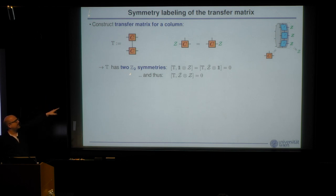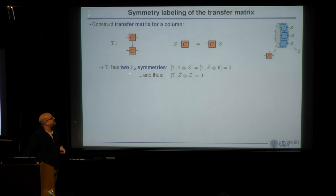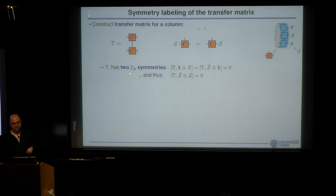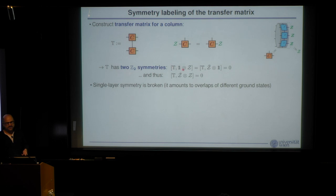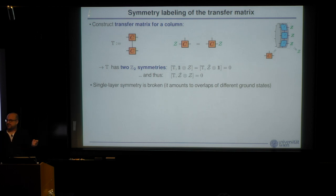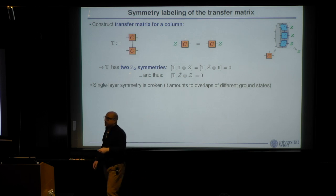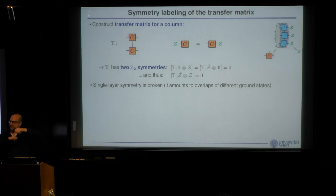For the transfer matrix of one column, we have two symmetries — one on the ket and one on the bra level — giving a joint Z2 symmetry. The single-layer symmetry is actually broken: different ground states in the topological phase are orthogonal, and that orthogonality is measured by this symmetry. So only the joint ket-bra symmetry remains. This symmetry labels the eigenvalues of the transfer matrix as even or odd. The leading eigenvalue in the even sector is one (from normalization), while the other sector gives zero because it amounts to the overlap of different ground states.